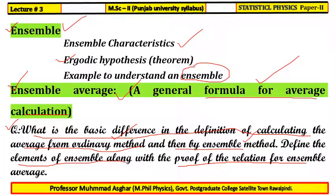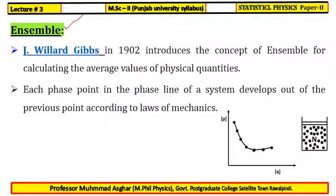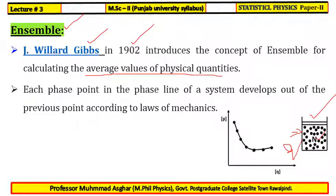The concept of ensemble was introduced by Gibbs in 1902. This concept enabled us to calculate the average values of physical quantities. In statistical mechanics, we consider a system of gas containing N molecules. These molecules are moving randomly and have microstates. We find the position q and momentum p of each particle, which defines the microstates of the system.